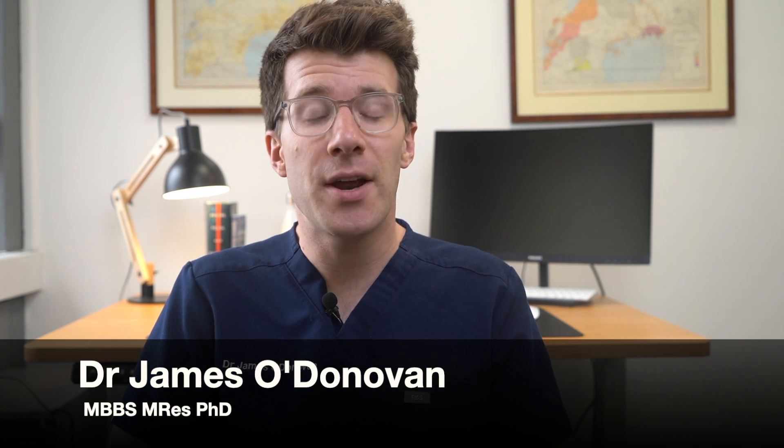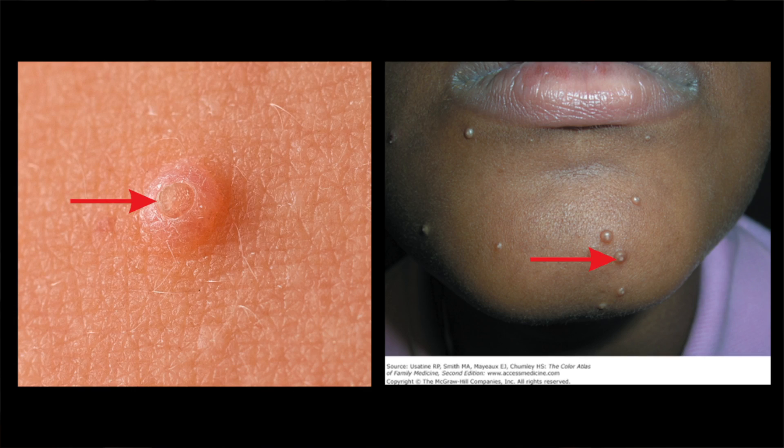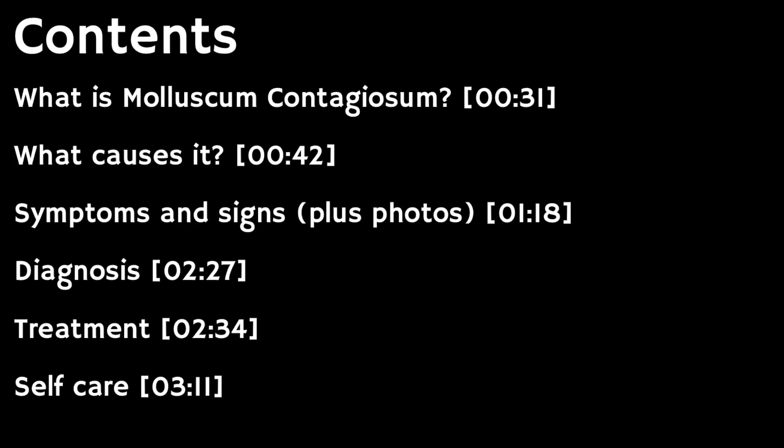In this video we're going to cover key things you need to know about an infection that causes spots on the skin, which is called molluscum contagiosum, and is generally considered to be harmless. We're going to look at what it is, what causes it, symptoms and signs including lots of clinical photos on different skin types to help you recognise it, as well as what can be done about it. Links to reputable sources are in the description box, and each section is split into chapters so you can skip ahead.